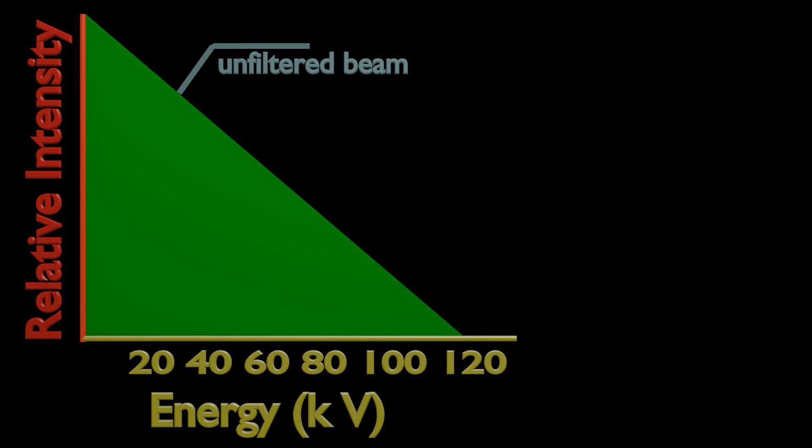Maximum energy of X-ray is numerically equal to potential difference kV applied at X-ray console. If one applies 120 kV at console, we will have a maximum energy of X-ray at 120 keV.